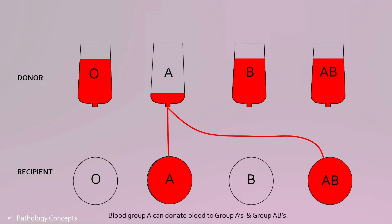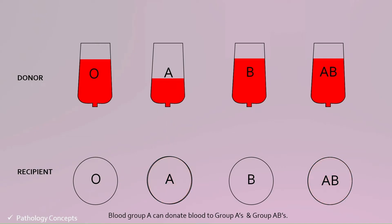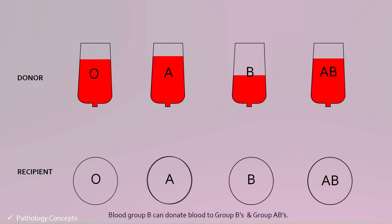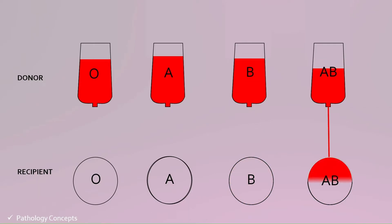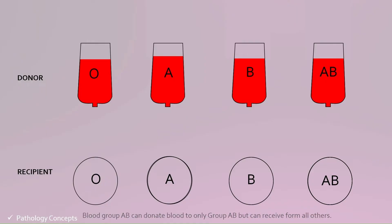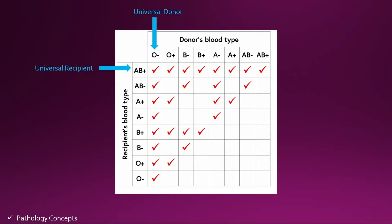The next is A. A blood group can be transfused to A and AB. Next is B. B can be transfused to B and AB. And the last is AB. AB blood group can only be given to AB, but the AB blood group can receive blood from all others.